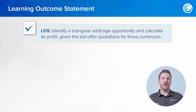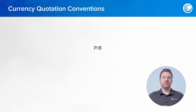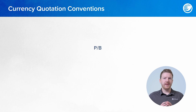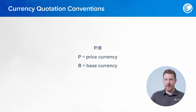We need to identify triangular arbitrage opportunities and calculate the profits given the bid-offer quotations for three separate currencies. There's one currency quotation convention we need to be aware of: currencies are quoted in a price-to-base relationship, where P stands for price currency and B stands for base currency.